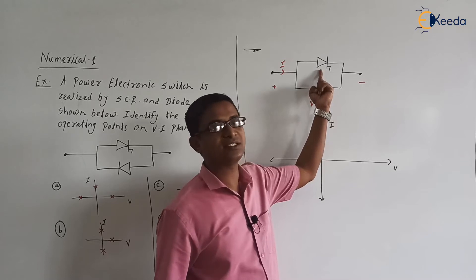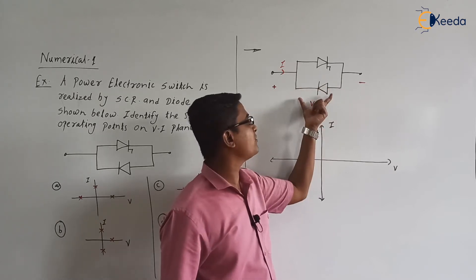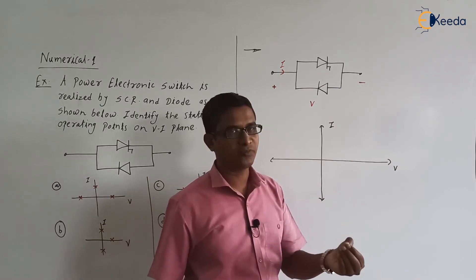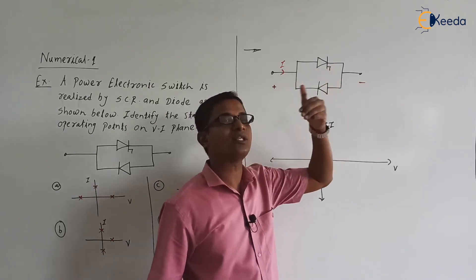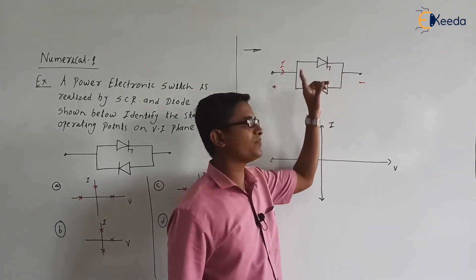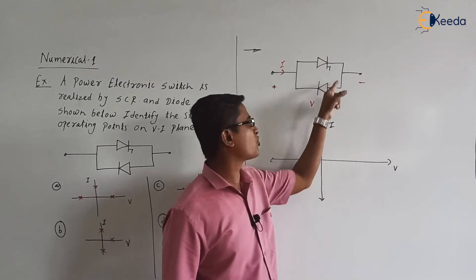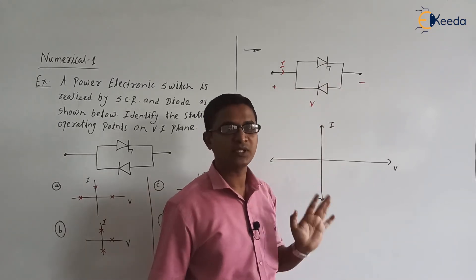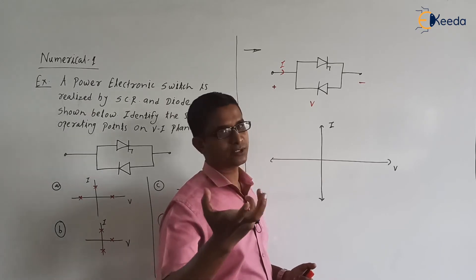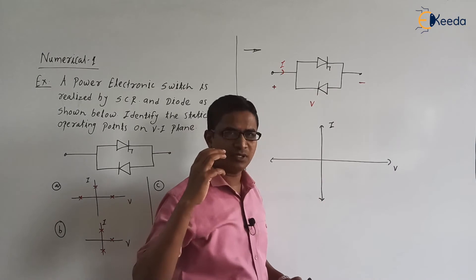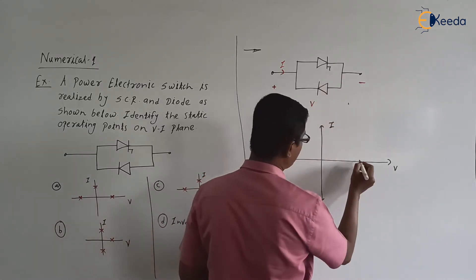When SCR is in the off state, this voltage will appear as a forward voltage for the SCR. But our SCR is in the blocking mode — the forward blocking mode — so definitely our SCR will block that voltage. If we consider this switch combination as a single unit, can we say that this switch combination is blocking the forward voltage? Yes. Because if the forward voltage is applied, the diode will be in the reverse bias mode, acting as an open switch. SCR is also in the blocking mode, so the switch combination blocks the forward voltage.